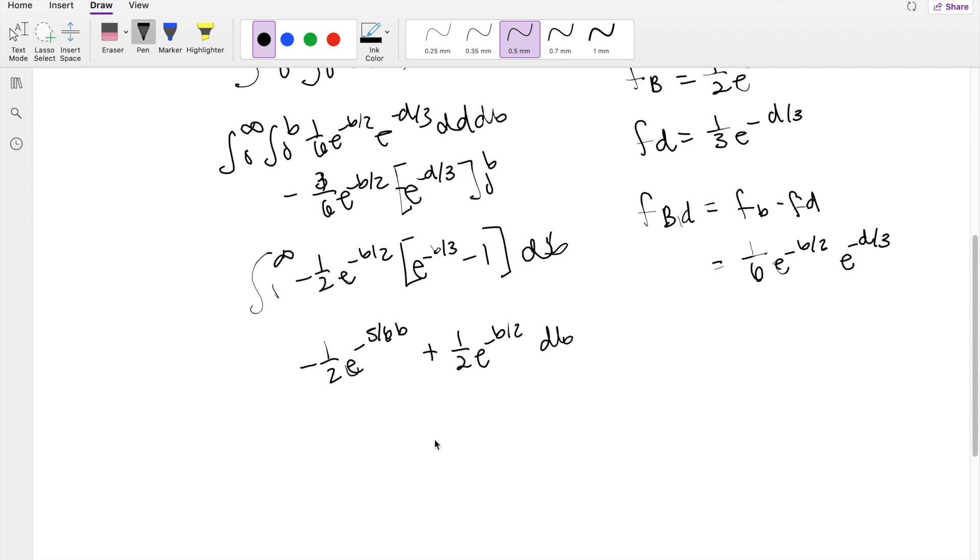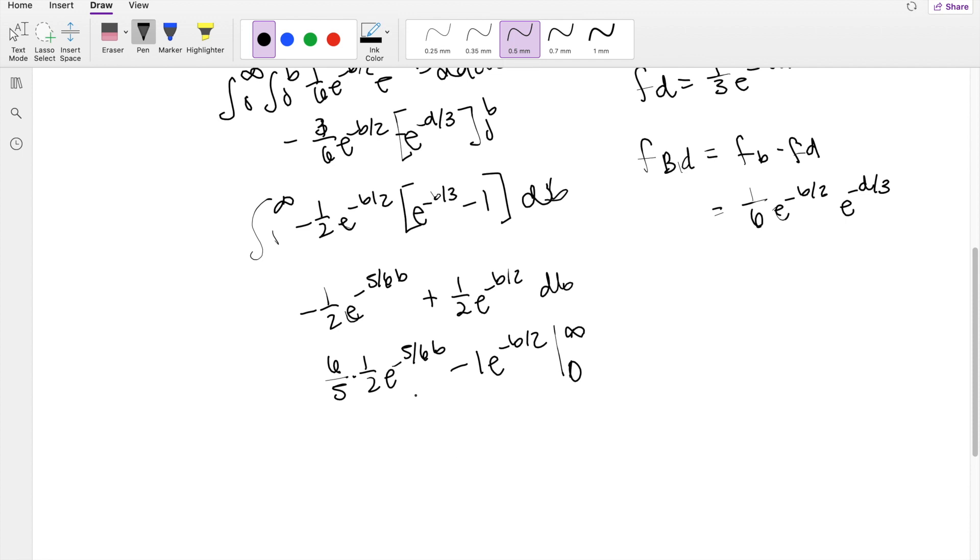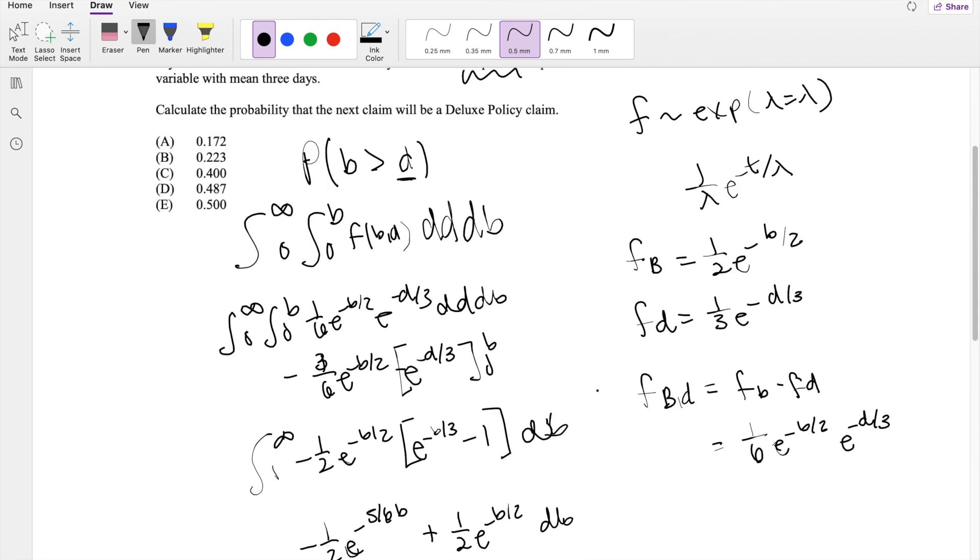If we integrate with respect to b, right here you're going to get 6/5 times 1/2 e to the negative 5/6 b, minus 1 e to the negative b over 2, integrating from 0 to infinity. If we plug in the upper limit, e over a really big number is just going to be 0. So then this is going to be 0 minus 0, minus, when I plug in 0 here, you're going to get 1, so you get 6 over 10, plus 1, which is equal to 4 over 10, which is our answer, c.